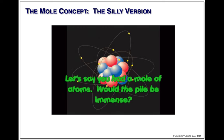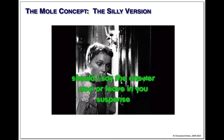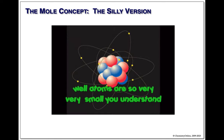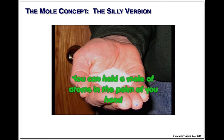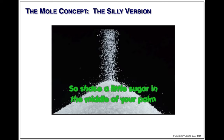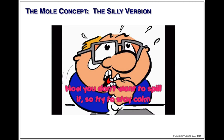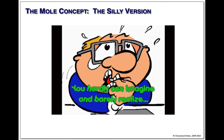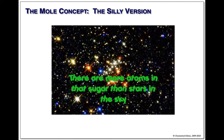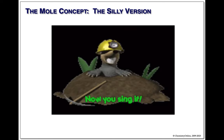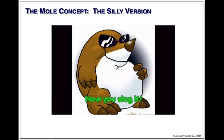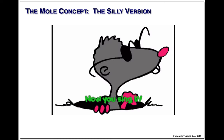But say you had a mole of atoms — would the pile be immense? Atoms are so very, very small that you can hold a mole of atoms in the palm of your hand. So shake a little sugar in the middle of your palm — you hardly can imagine, barely realize, there are more atoms in that sugar than stars up in the sky. A mole is a unit containing 6 times 10 to the 23rd — that's a 6 with 23 zeros at the end. Much too big a number to comprehend.